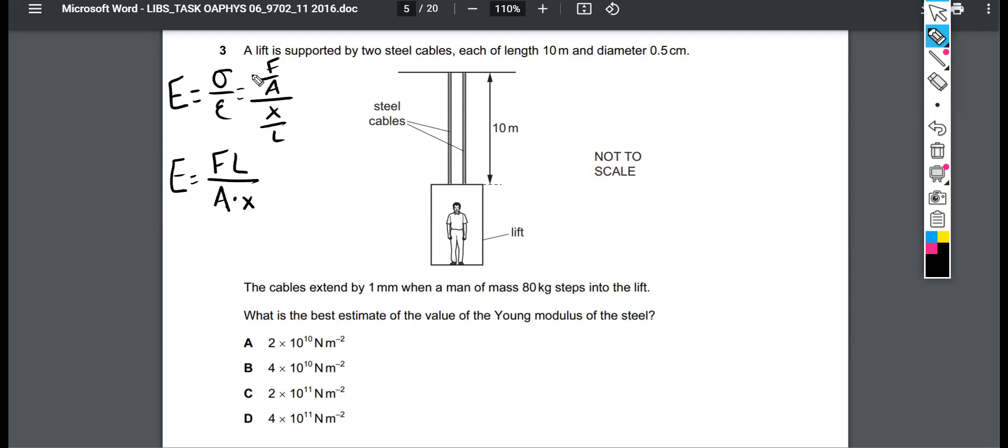It says a lift, which is an elevator, is supported by two steel cables, each of length 10 meters, and that's labeled here, and a diameter of 0.5 centimeters. The cables extend, telling us this information, by one millimeter when a man of mass 80 kilograms steps into the lift. What is the best estimate of the value of the young modulus of the steel?